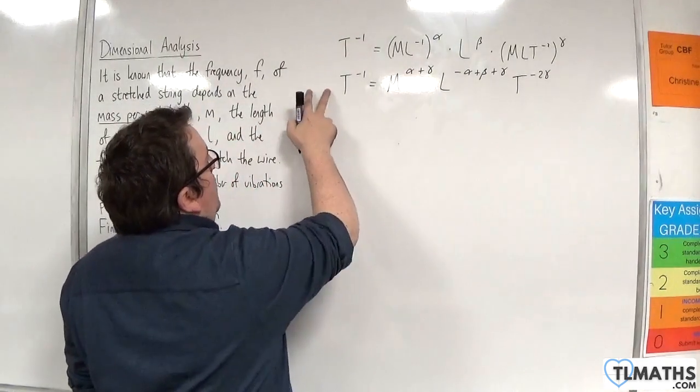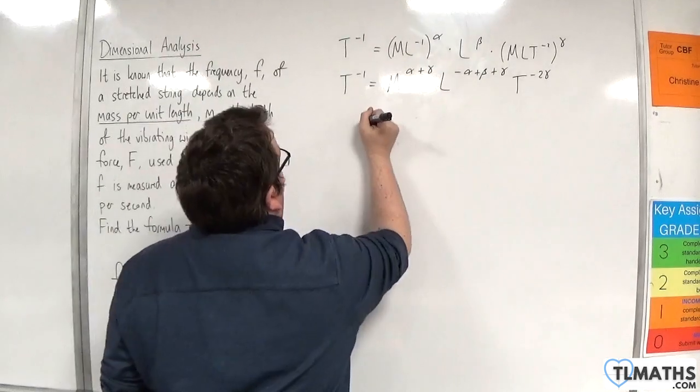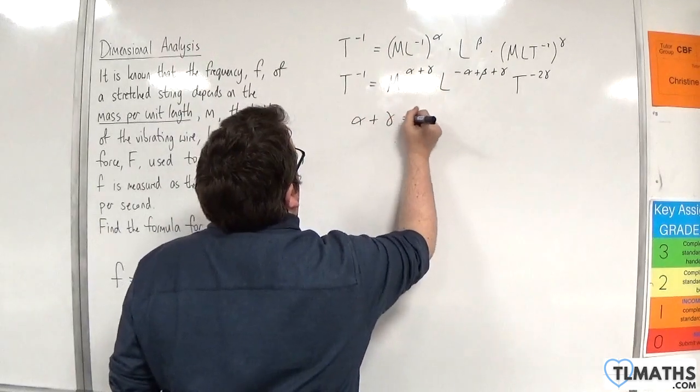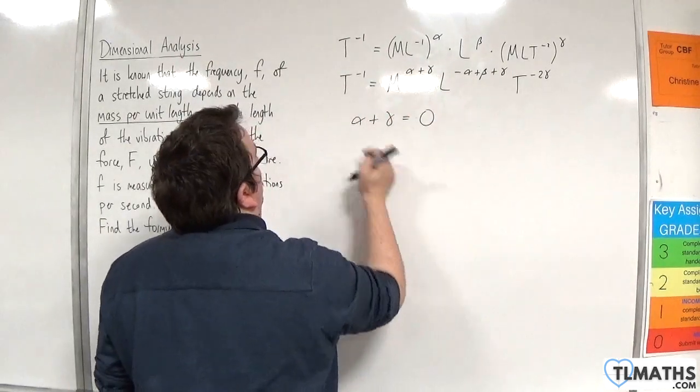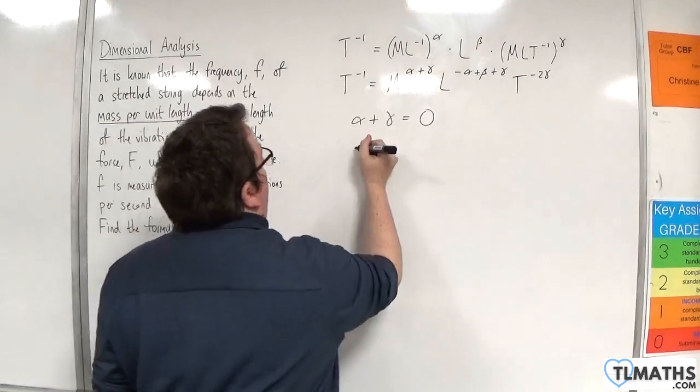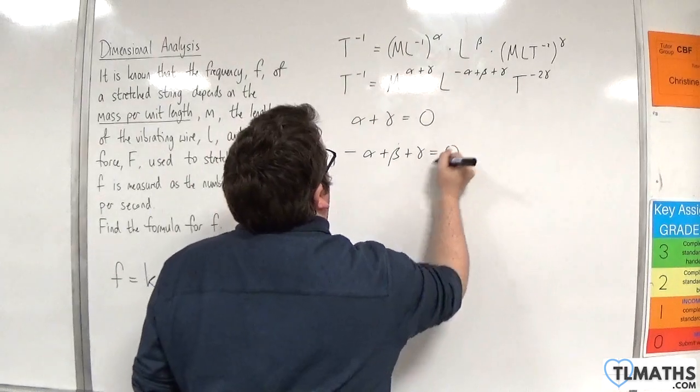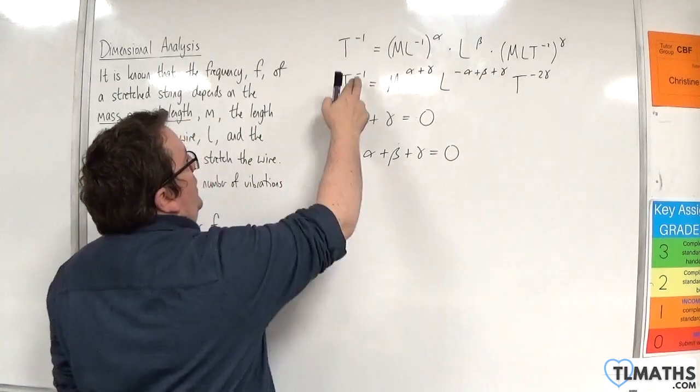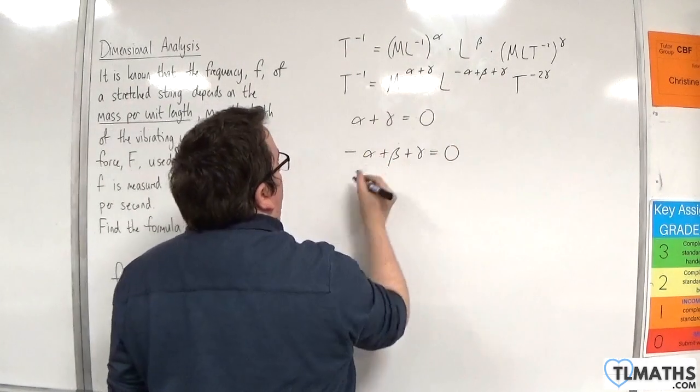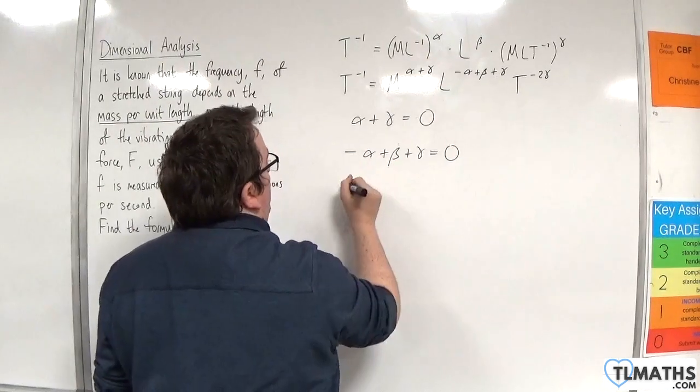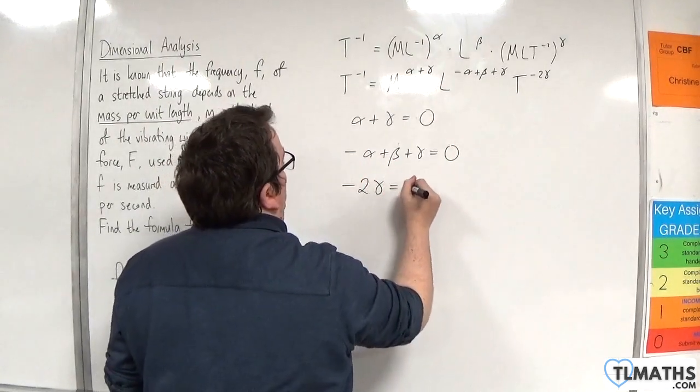Now we have no m's on the left hand side, so that's telling me that alpha plus gamma must be zero. We have no l's on the left hand side, so minus alpha plus beta plus gamma must also be zero. We do have t to the minus one on the left hand side, so the minus two gamma has to be equal to minus one.